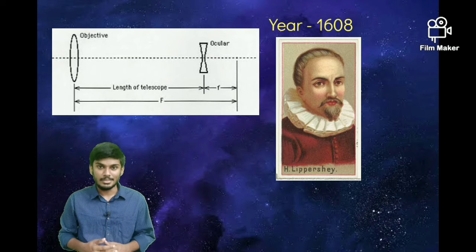The telescope which was made by Hans Lippershey had a convex lens as a primary lens and a concave lens as an eyepiece.